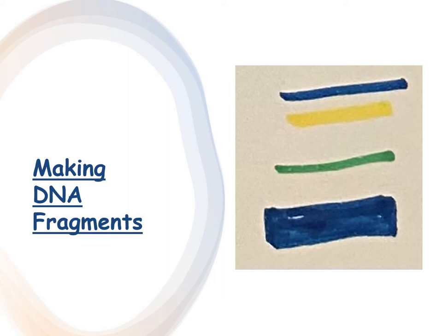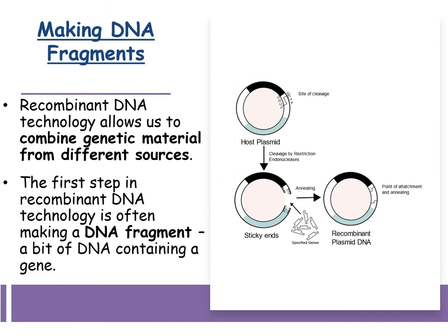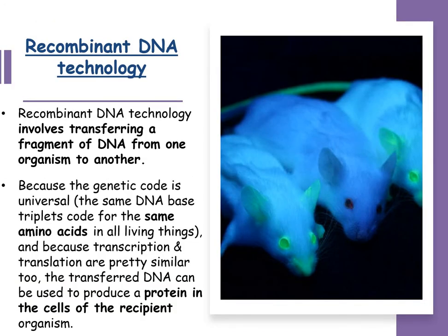Making DNA fragments. Recombinant DNA technology allows us to combine genetic material from different sources. The first step in recombinant DNA technology is making DNA fragments, which is a bit of DNA that contains the gene that you want. Recombinant DNA technology involves transferring a fragment of DNA from one organism into another.